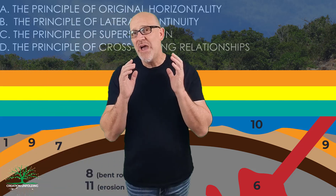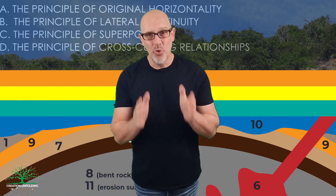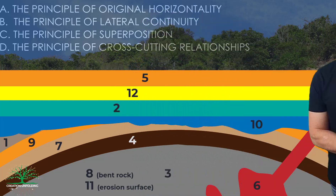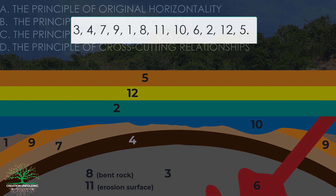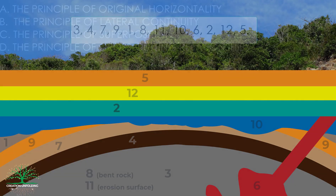So how did you do? This is the order you should have got: 3, 4, 7, 9, 1, 8, 11, 10, 6, 2, 12, and 5.